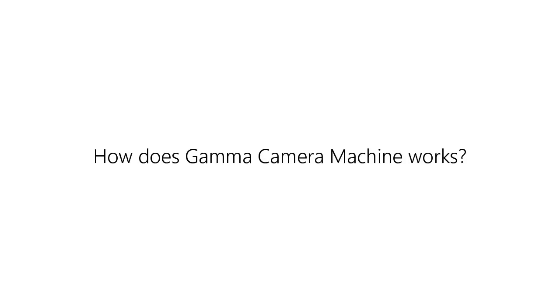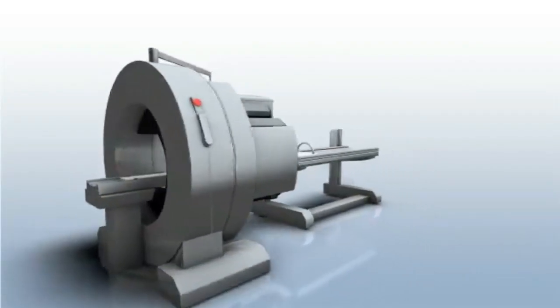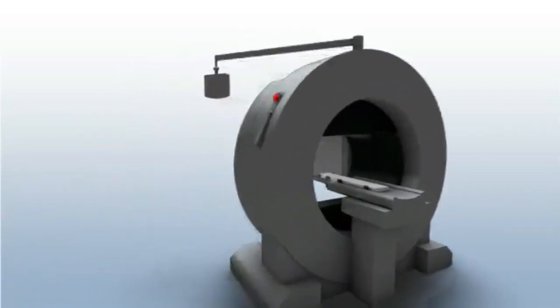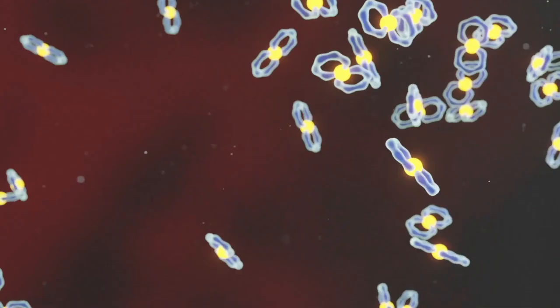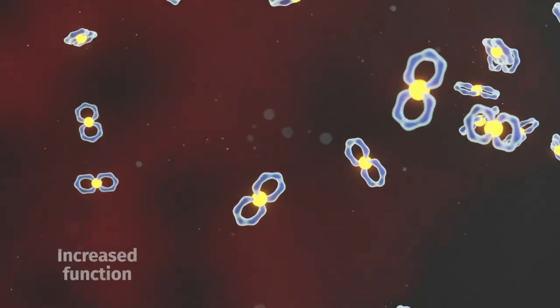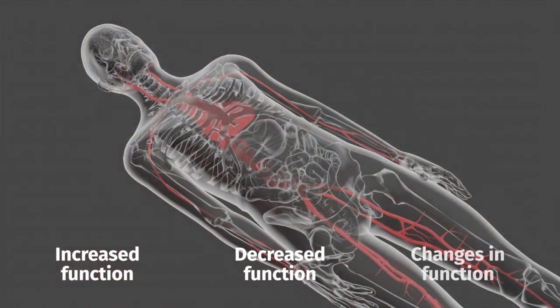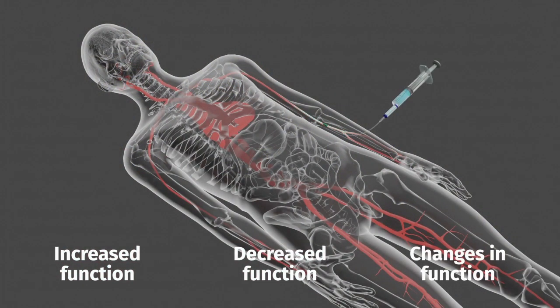How does a gamma camera machine work? Gamma cameras, also called anger cameras and scintillation cameras, are the most common means of forming an image. These cameras capture photons and convert them to light and then to a voltage signal. This signal is reconstructed to a planar image that shows the distribution of the radionuclide in the patient.